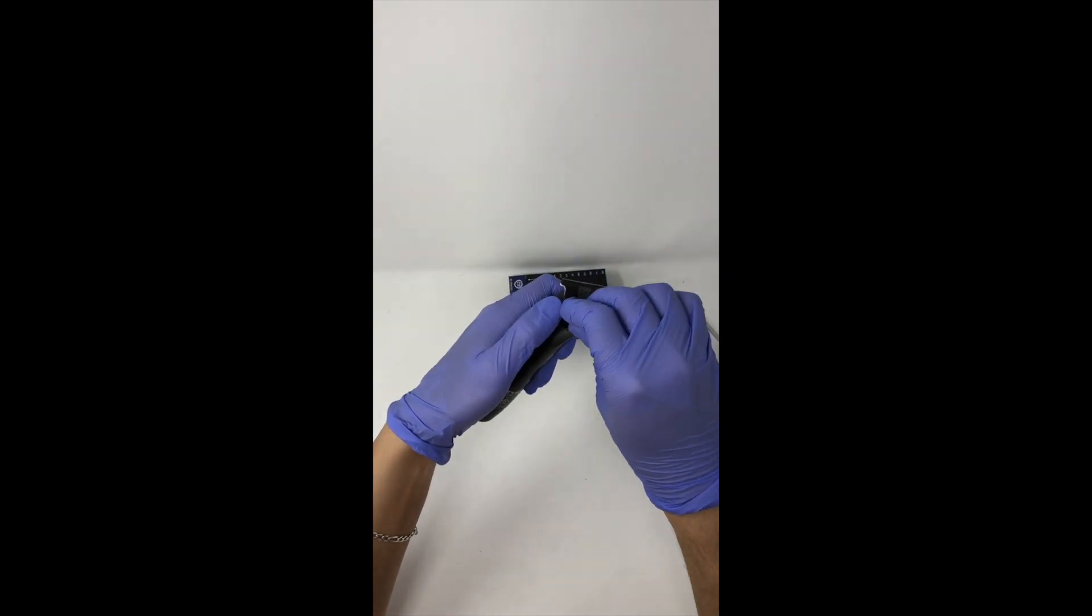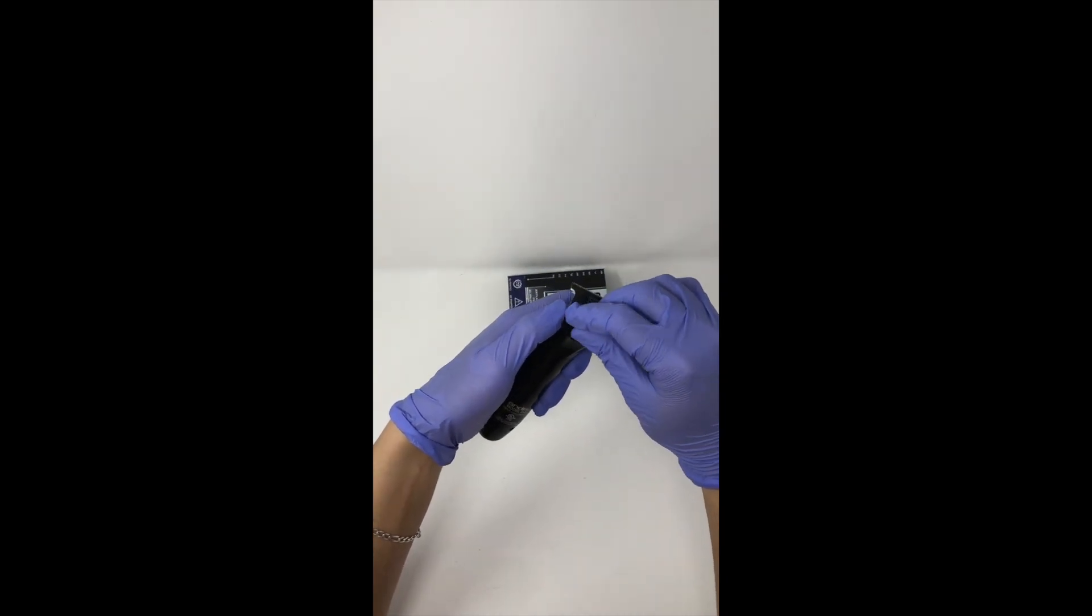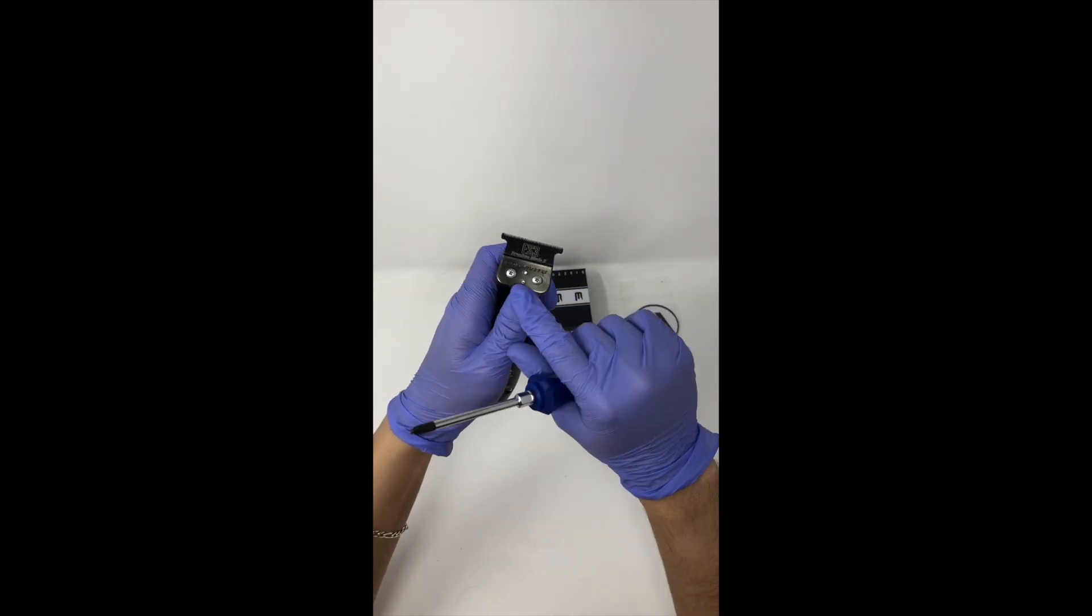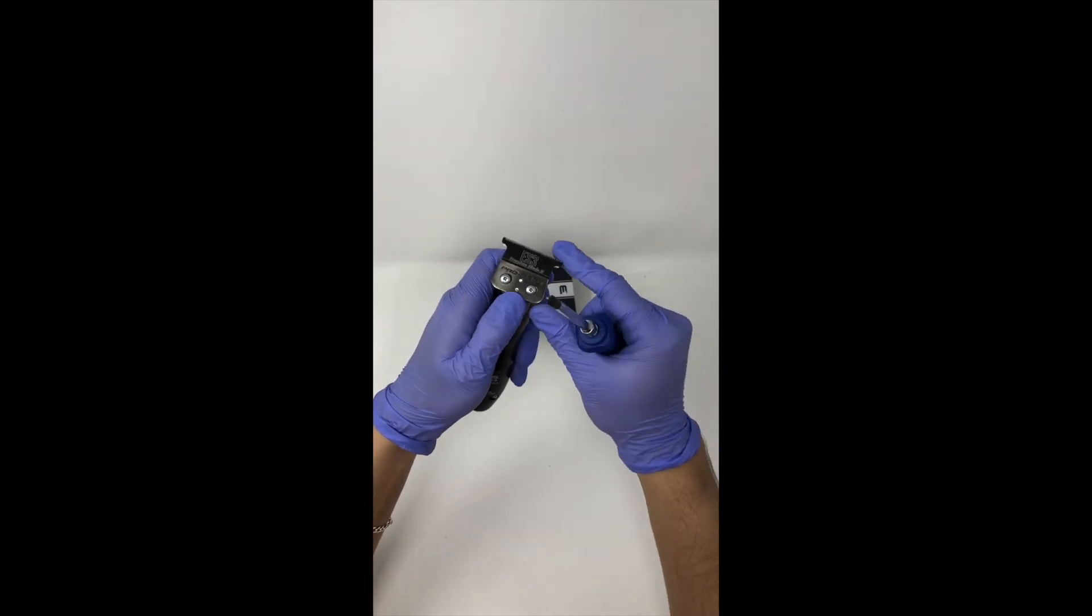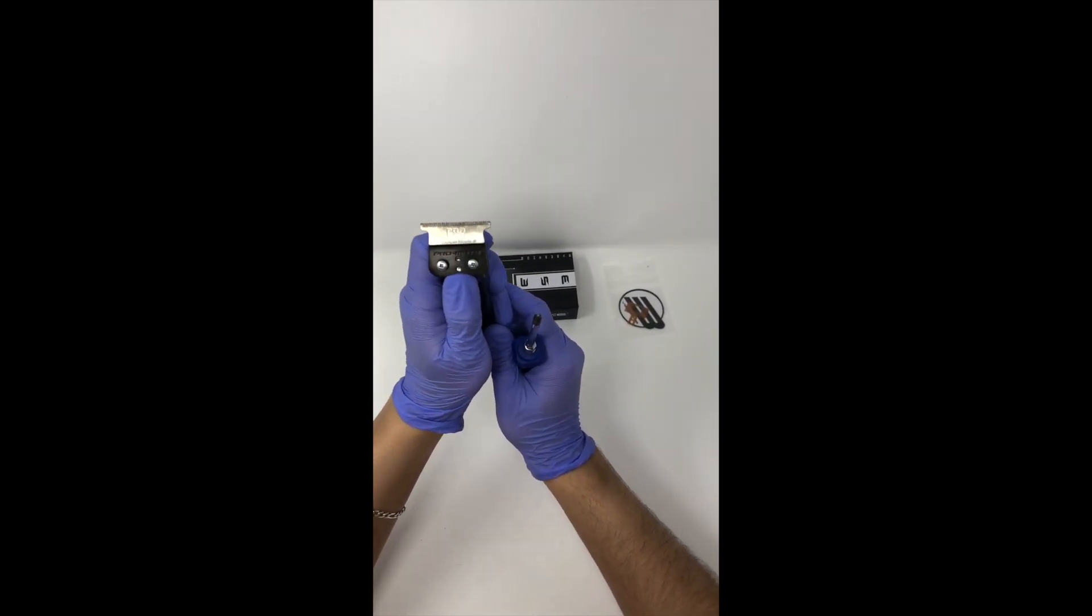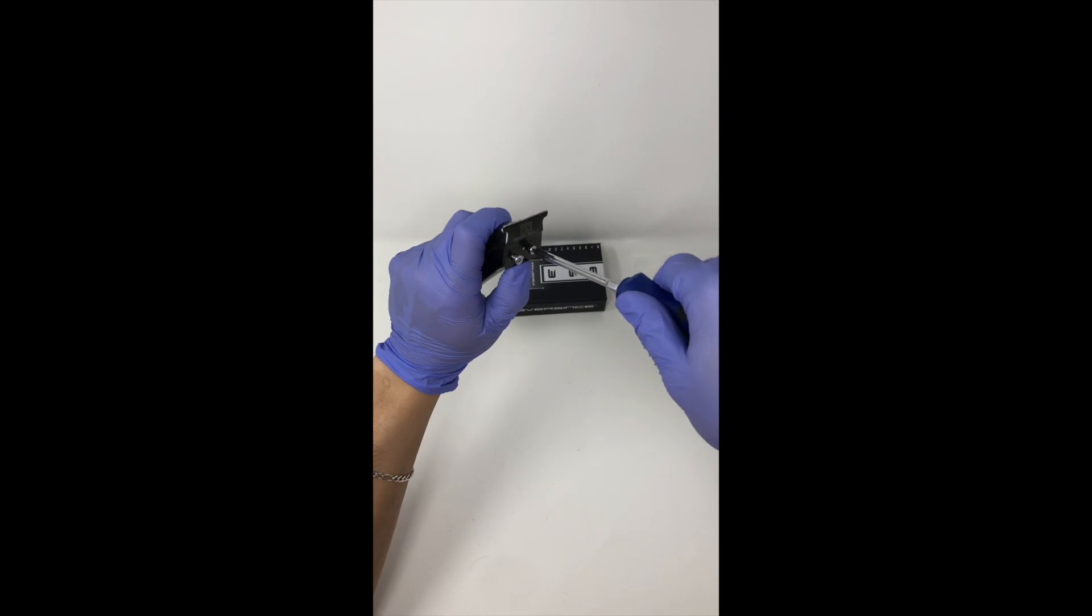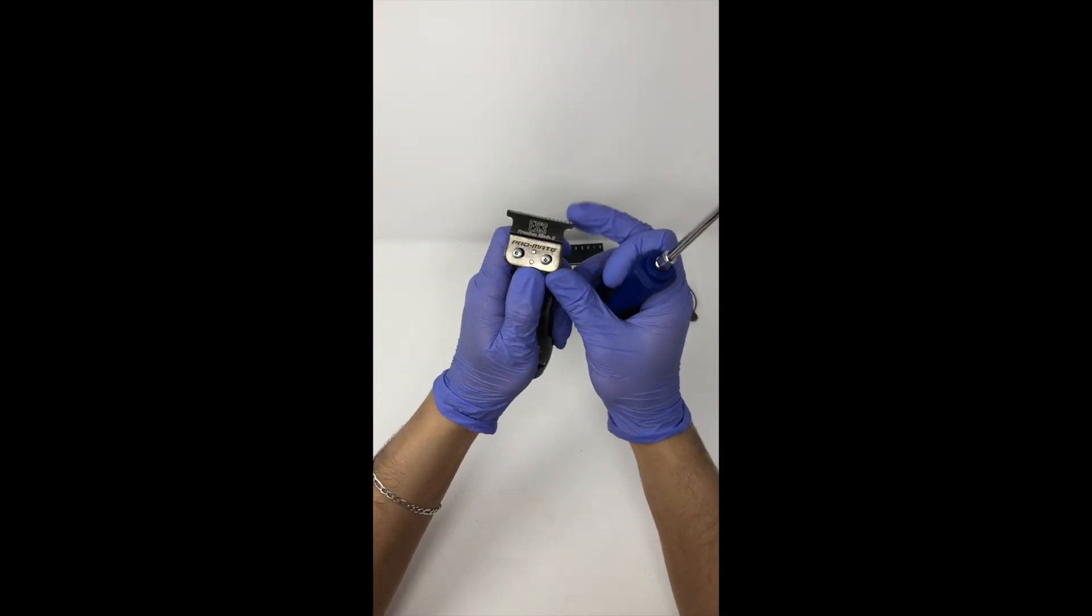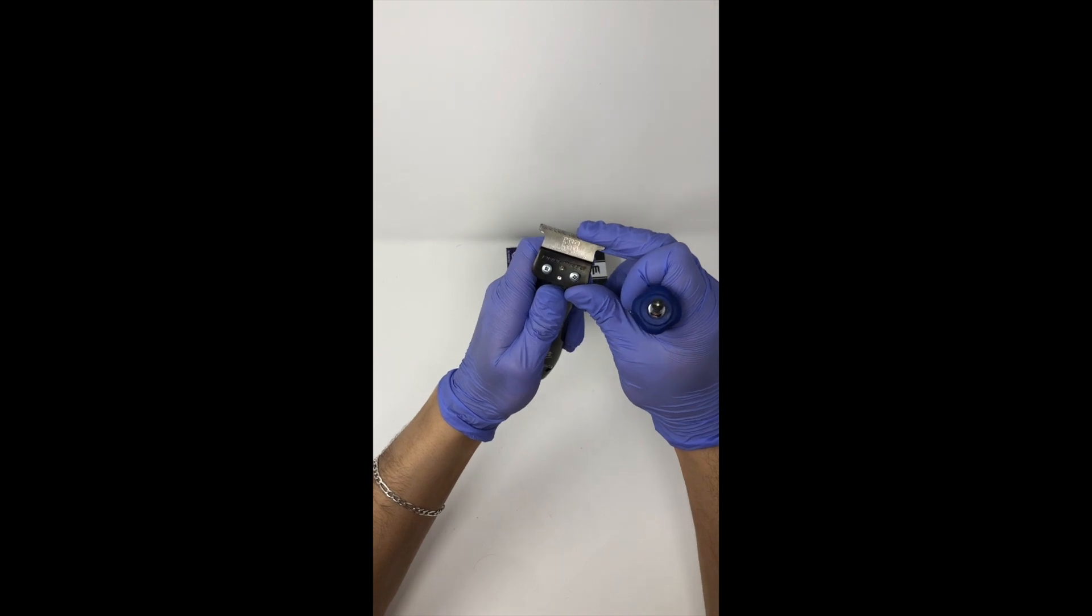Now grab the other screw and put that in. Once it's nice and snug, you can push up here on the blade. If you want, you can unscrew this one a little bit, loosen it up, and you can see this blade going back and forth.